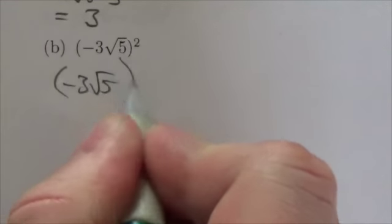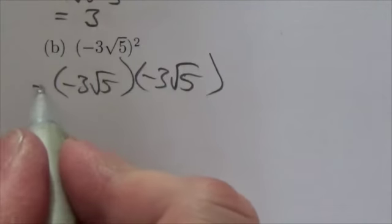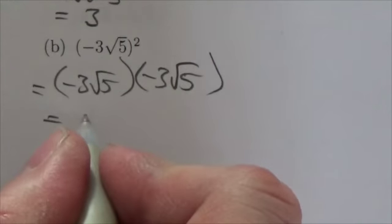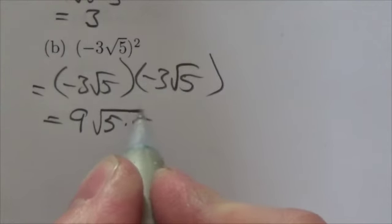So negative 3 root 5 squared means negative 3 root 5 times negative 3 root 5. And so to evaluate this, I multiply the coefficients together. So negative 3 times negative 3 will be positive 9.